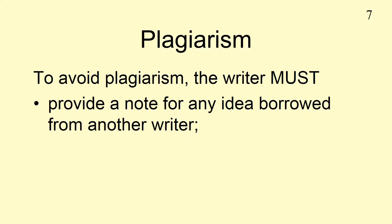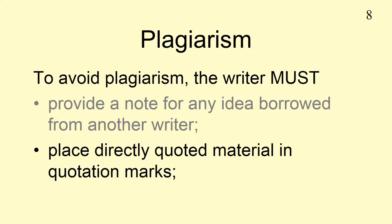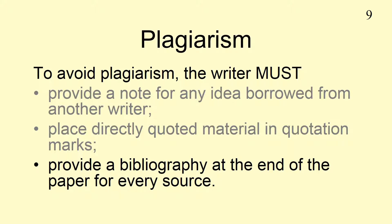Using another person's words and/or ideas as if they were one's own, or without acknowledging the source, is known as plagiarism. Copying, when exact words are used without using quotation marks, or without acknowledging that it is in fact a quotation, is the most serious form of plagiarism. In an academic paper, it is essential to avoid plagiarism. To avoid plagiarism, the writer must provide a note for any idea borrowed from another writer, place directly quoted material in quotation marks, and provide a bibliography at the end of the paper for every source.